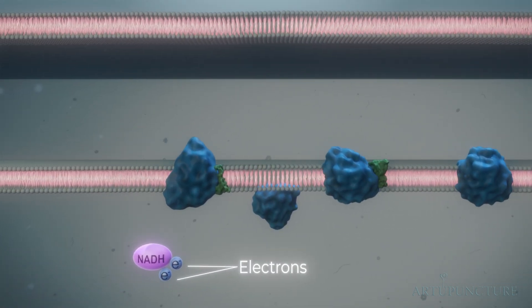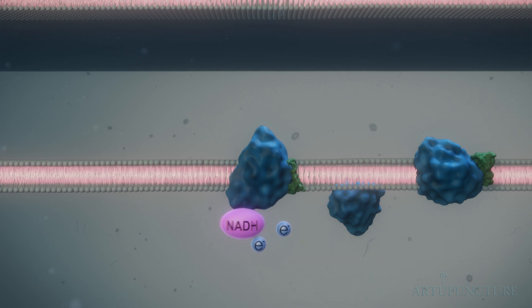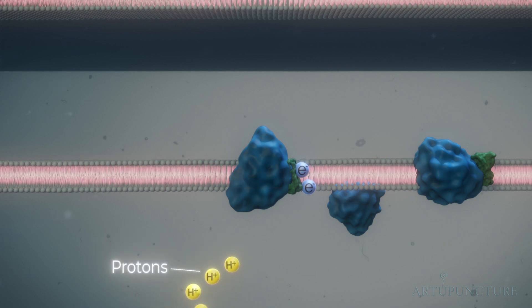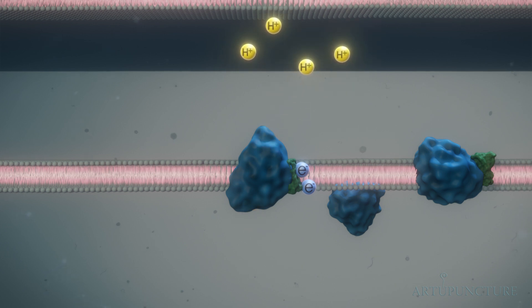NADH is oxidized to NAD+, releasing electrons into complex I. The electrons pass to coenzyme Q. They trigger the pumping of protons into the intermembrane space.